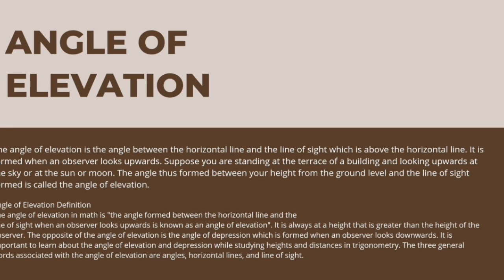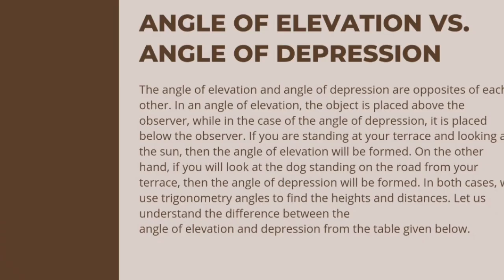The three general terms associated with the angle of elevation are angles, horizontal lines, and the line of sight. Angle of elevation formula: The angle of elevation formula is no different from the formulae of the trigonometric ratios. With the help of these formulae, we can find the angle of elevation depending on which two sides of the triangle are known. For example, if we have to find the angle of elevation when the height of the object from the horizontal line and the length of the line of sight are known, we can use the sine formula.